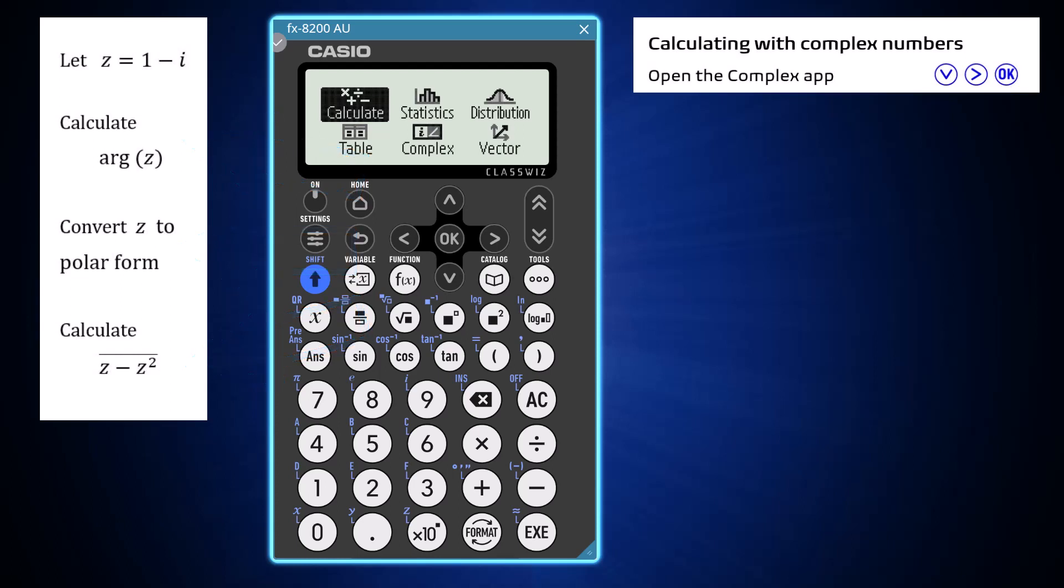To perform such calculations, first navigate to the Complex app using the arrow keys and then open it by pressing OK.